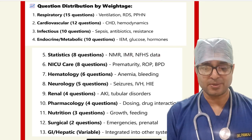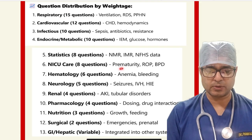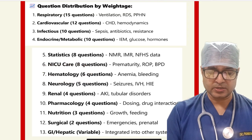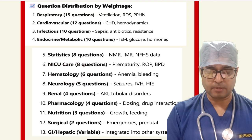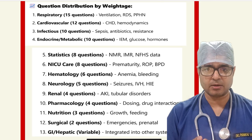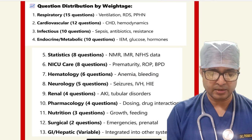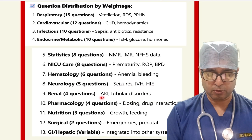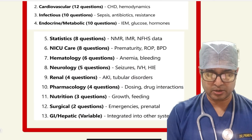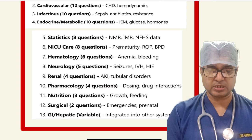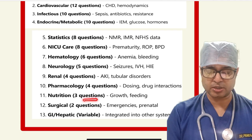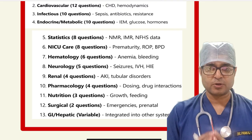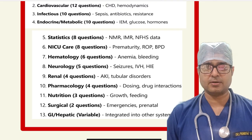ICU care topics like prematurity, ROP, and BPD questions were asked. Neonatal hematology had approximately six cautions on anemia and bleeding. Neurology had around five cautions on seizures, IVH, and HIE. Renal had around four cautions on AKI and tubular disorders. Pharmacology had four cautions on neonatal dosing, drug interactions, nutrition, and surgical GI cautions, with some overlap between topics.